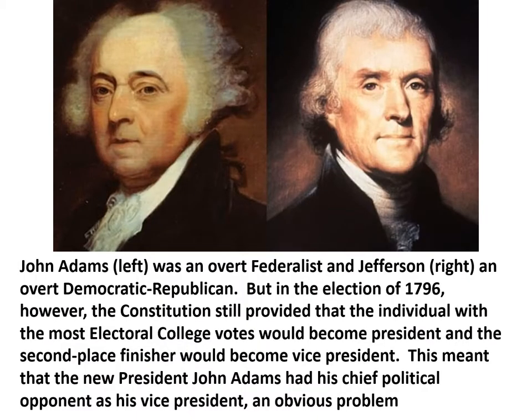John Adams, on the left here from Massachusetts, was an overt Federalist. He wasn't trying to be as impartial as Washington had been — he had an opinion. And Jefferson, on the right, as we've already said, was overtly identifying with the emerging faction, the emerging party, the Democratic-Republicans.